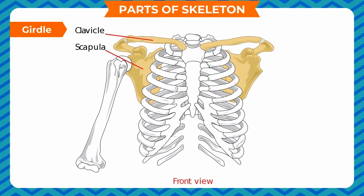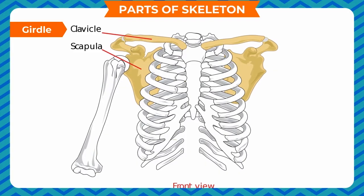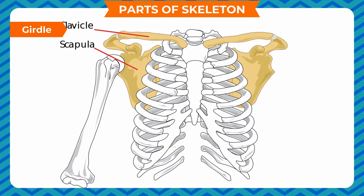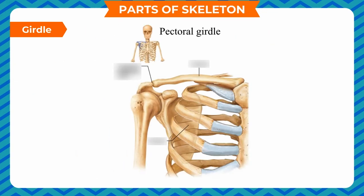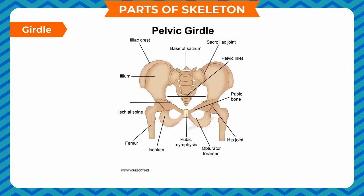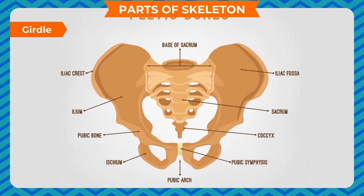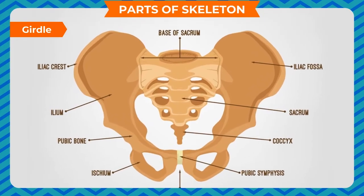Girdles are part of the appendicular skeleton and serve the function of attaching the limbs with the body. The pectoral girdle joins the upper limbs with the axial skeleton; it consists of the collar bone and the shoulder blades. The pelvic girdle joins the lower limbs with the axial skeleton, bears the weight of the body, and helps in movement. Each of the two hip bones is made by the fusion of three bones.